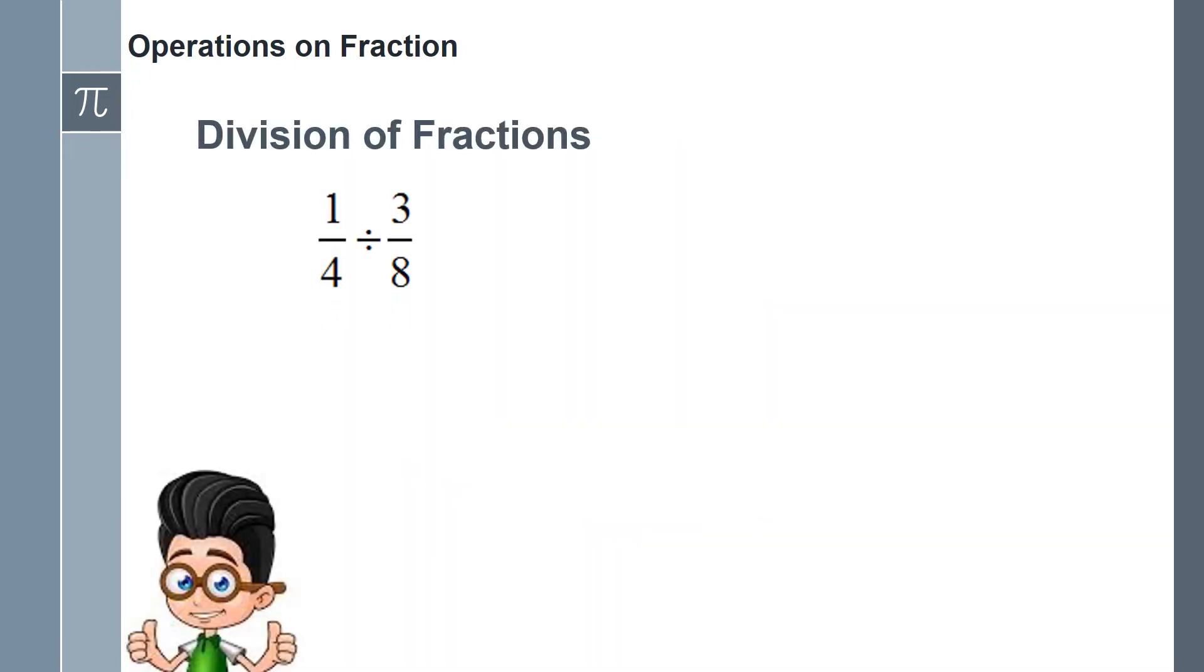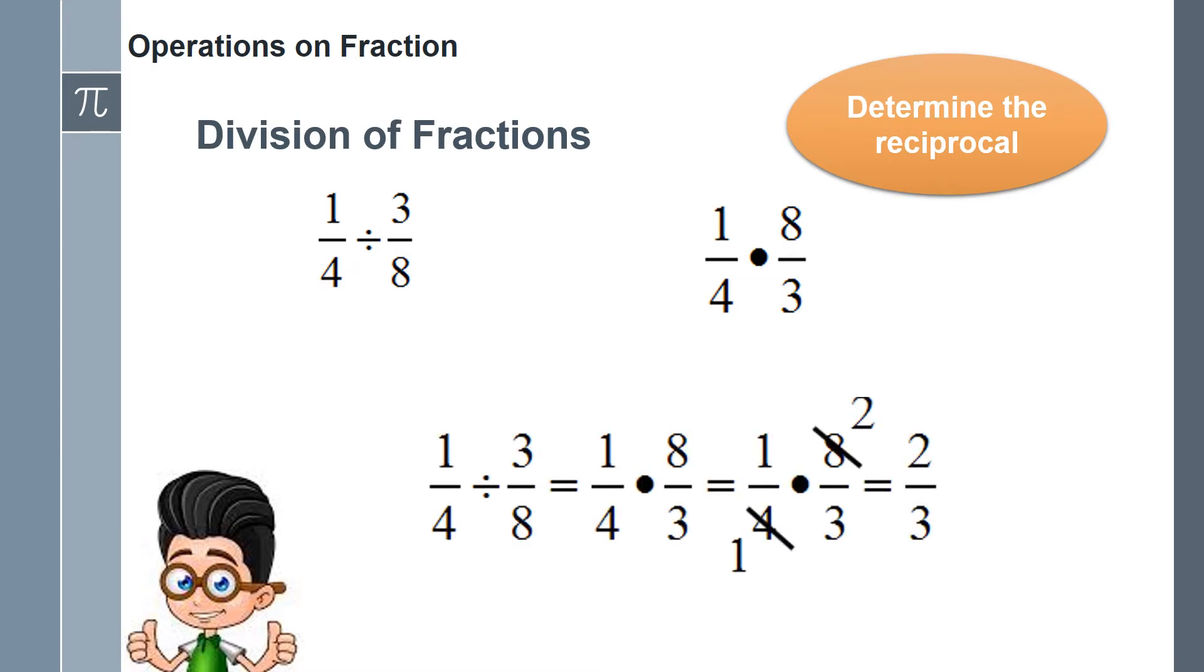Dividing fractions. In dividing fractions, first you need to determine the reciprocal of the divisor. Second, proceed to multiplication applying the rules of multiplication of fractions. Then you can either reduce the fractions during the process by applying the cancellation process, or you just reduce it in the final answer.